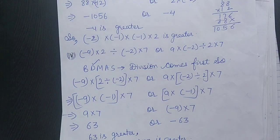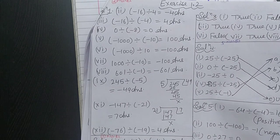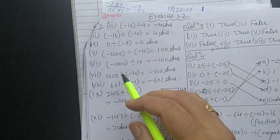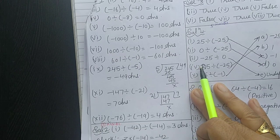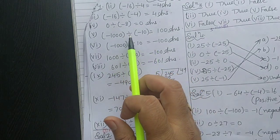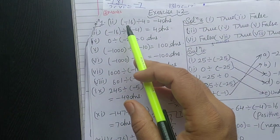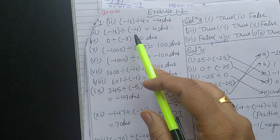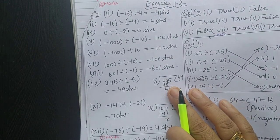Next is division. The next questions are from Exercise 1.2 — Division. For example, 0 divided by minus 8 gives us 0. Division is very easy; you just have to divide, but keep in mind the sign rules. If no sign is there then the number is positive; if a minus sign is there it is negative. Minus divided by plus gives a negative answer; minus divided by minus gives a positive answer. This division you have done in lower classes also, but if the sign is wrong then your answer will be wrong.